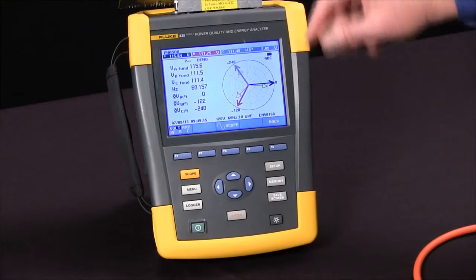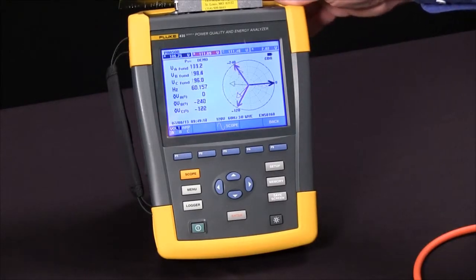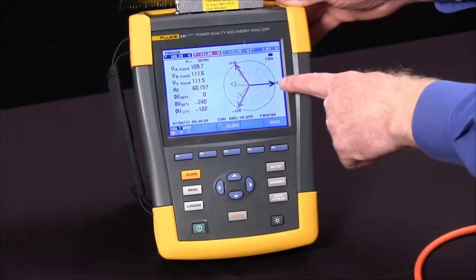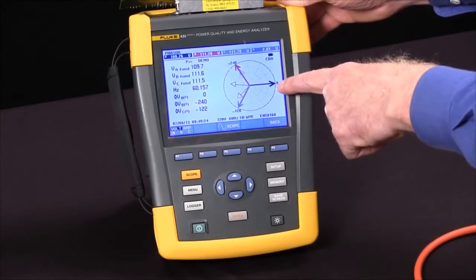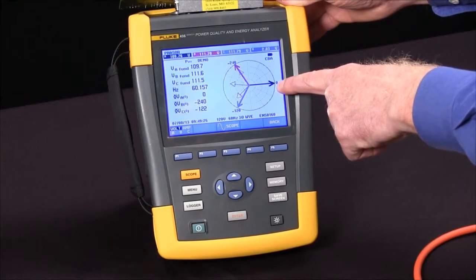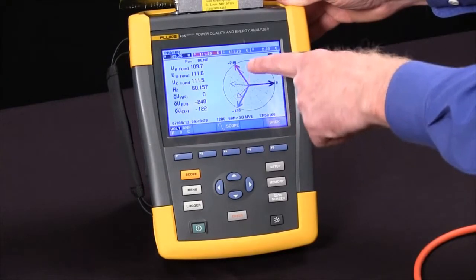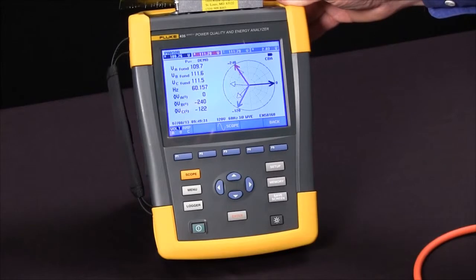If things were miswired, we might see something like this, in which case you can see your current vector for phase A is 180 degrees out of phase, meaning that current clamp is backwards, and your signals for B and C, those wires have been mixed up as well.